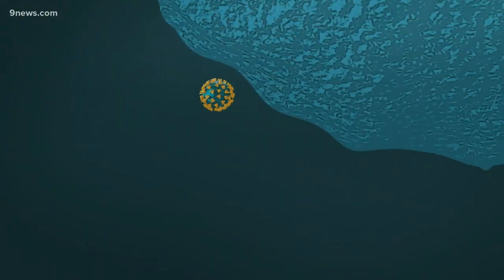Once the receptor grabs that spike, the virus can fuse with your cell's outer wall and slip right through it, almost like a ghost.